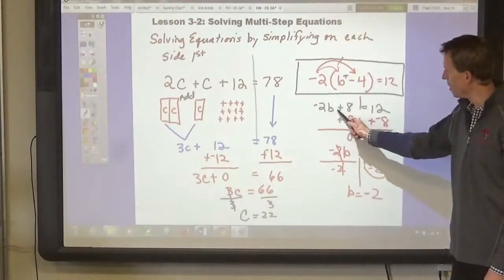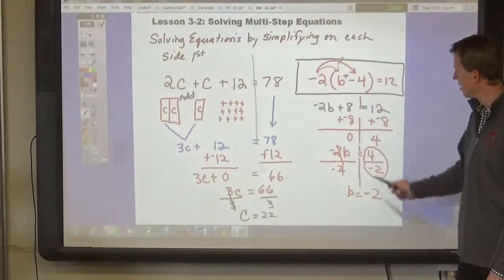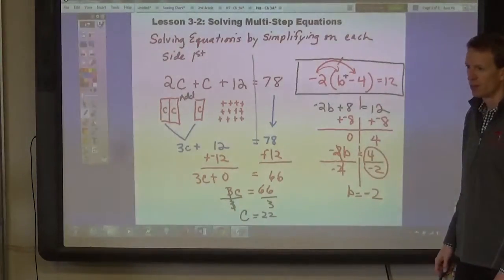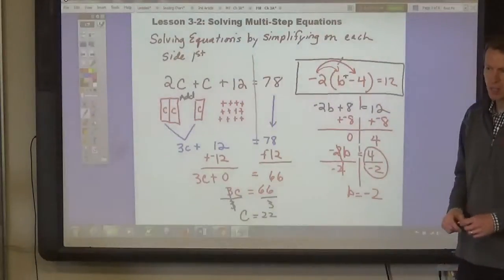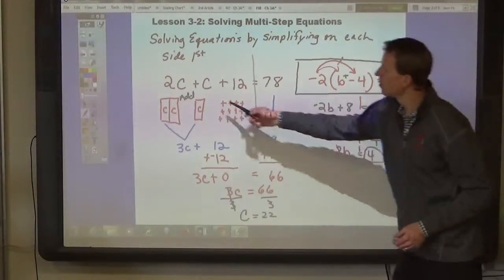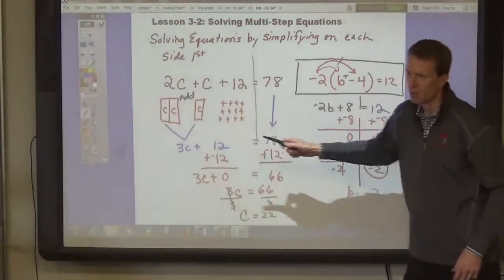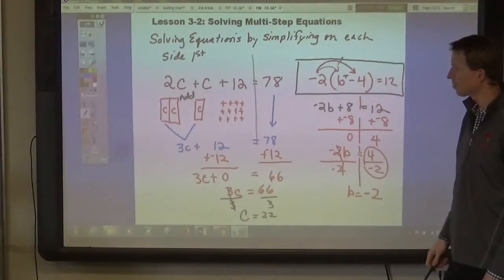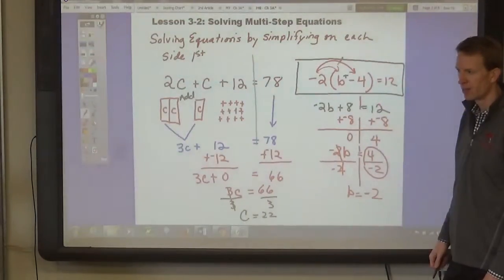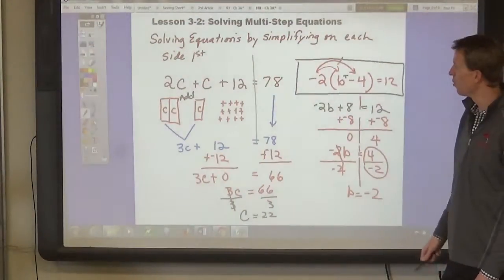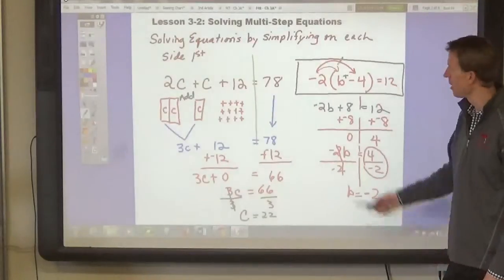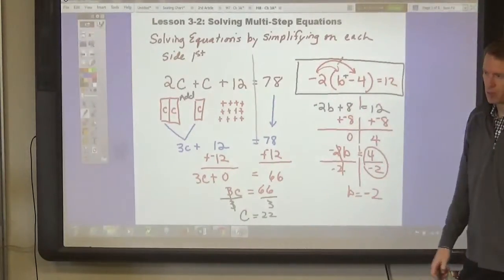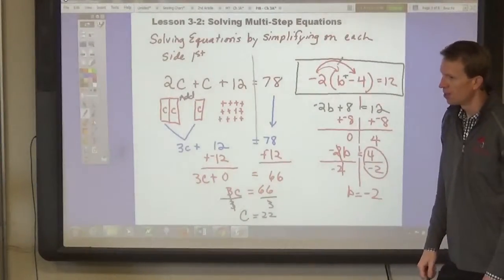Negative 2b plus 8 equals 12. Add negative 8 to both sides. And so on. So, there's two steps that we're doing before we start solving. One of them is combining like terms. One of them is distributing a number first. Okay? Sometimes you'll have to do both. Sometimes you'll have to distribute and then combine like terms.